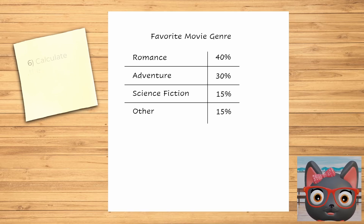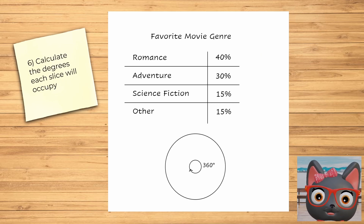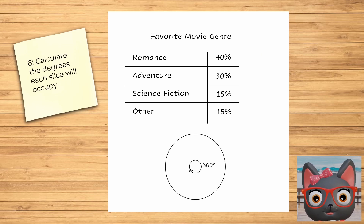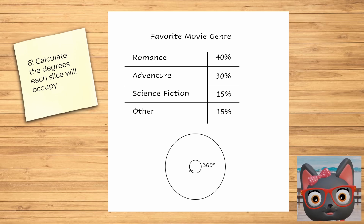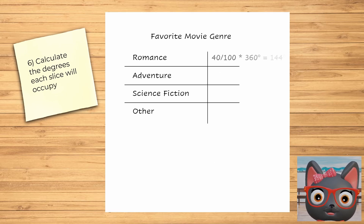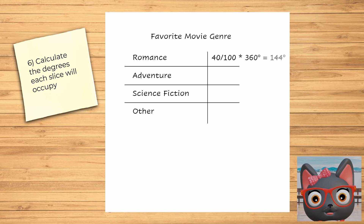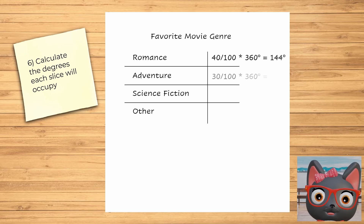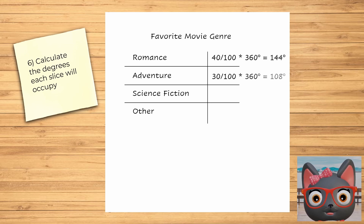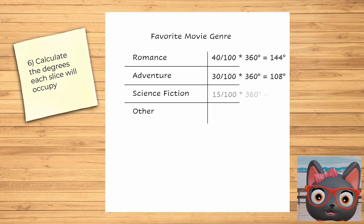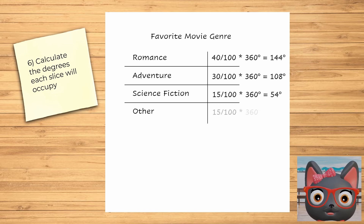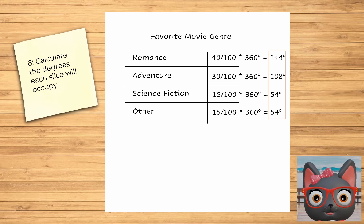Finally, calculate the degrees that each slice will occupy. Since a full circle is 360 degrees, we can multiply 360 with each percentage. 40 over 100 times 360 is 144 degrees. 30 over 100 times 360 is 108 degrees. 15 over 100 times 360 is 54 degrees. And 15 over 100 times 360 is 54 degrees.